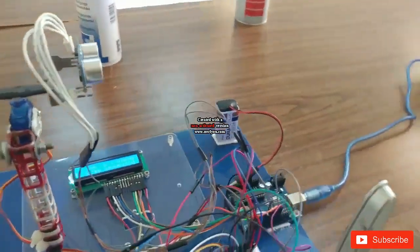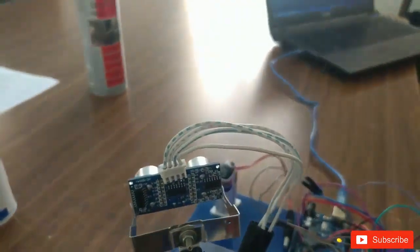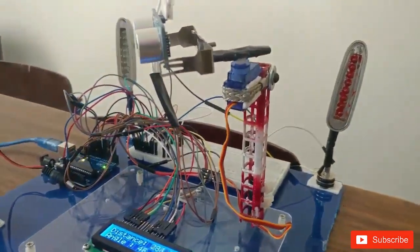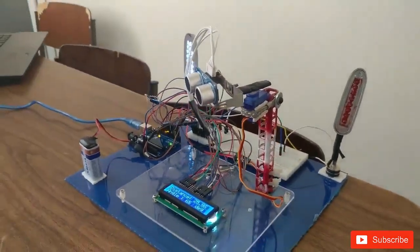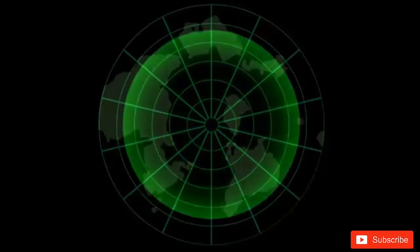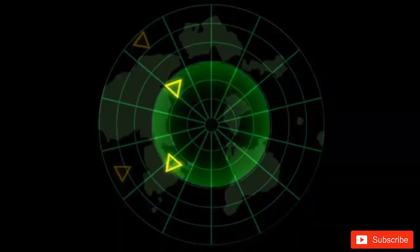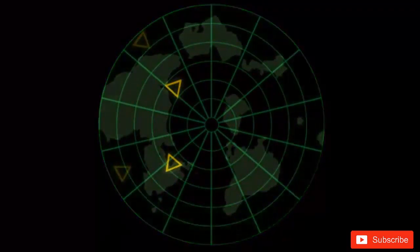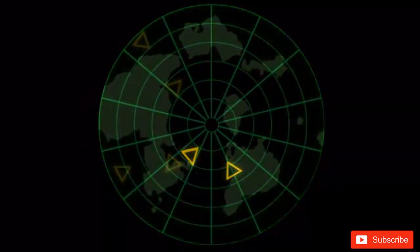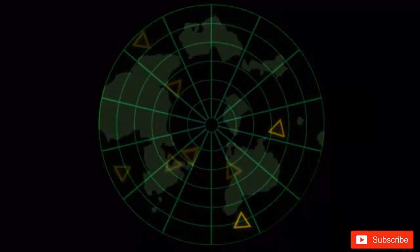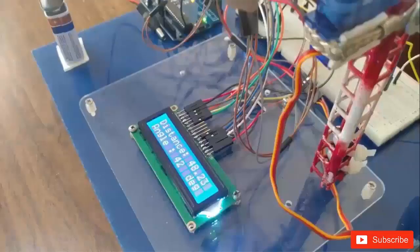This is the radar model demonstration project used for finding the distance and angle of any obstacle. In this project we will be designing a radar using an ultrasonic sensor that is mounted on a servo motor that will detect the object in its circular area.